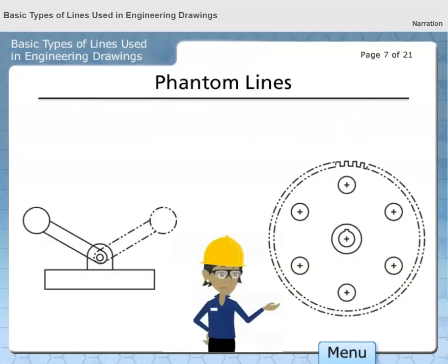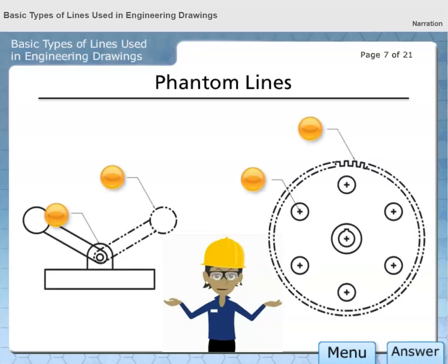Phantom lines represent the outline of an adjacent part, show alternate positions of a moving part, or replace repetitive details such as gear teeth and threads. These lines appear as thin width lines with two short dashes between single long dashes. Select the button that best represents a phantom line.